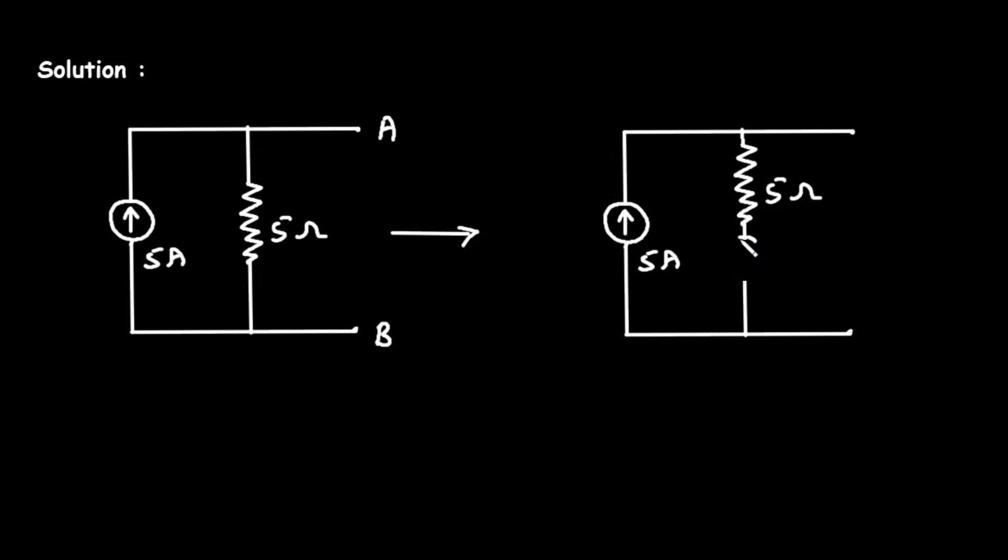And now, here we will create a voltage source. Now since the direction of this current source is upward, that means this voltage source polarity will be positive here and negative here. And also remember that, if the current source is connected in parallel, that time we have to create a voltage source in series.